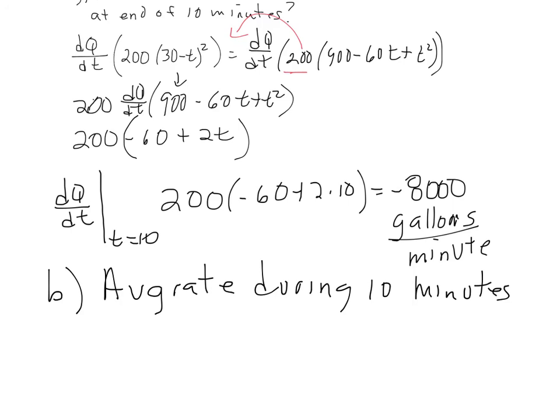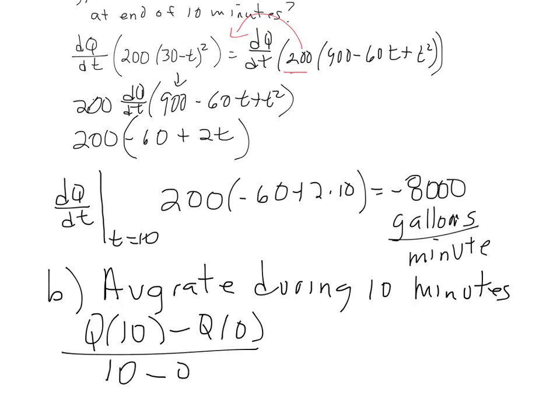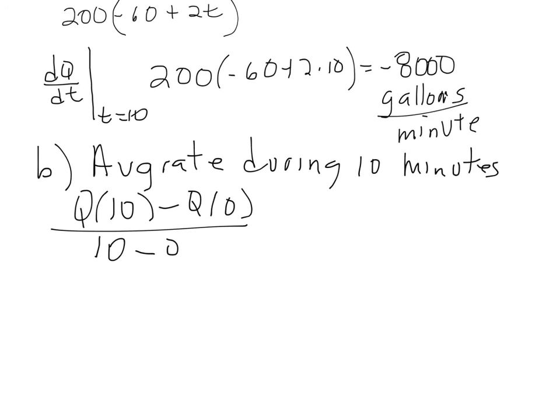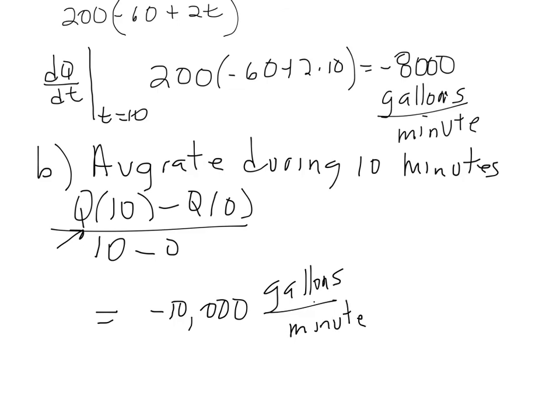Part B: the average rate during the first 10 minutes. This is the same thing we've been doing — take Q(10) minus Q(0) divided by 10. Plugging in gives you 10,000 gallons per minute as the average flow rate for the first 10 minutes. And we're done with Section 3.4. If you're unsure about word problems, go into the study plan and work all the 3.4 problems — that will prepare you.